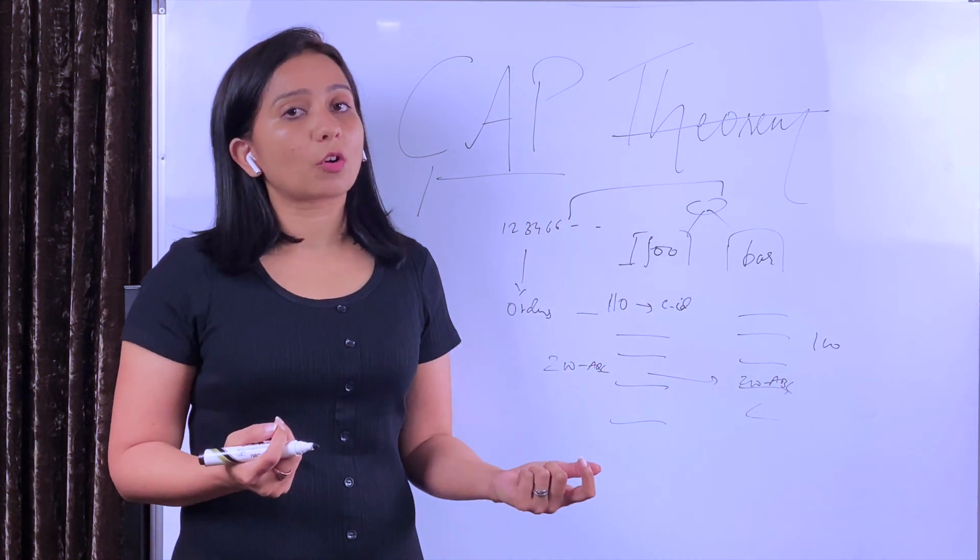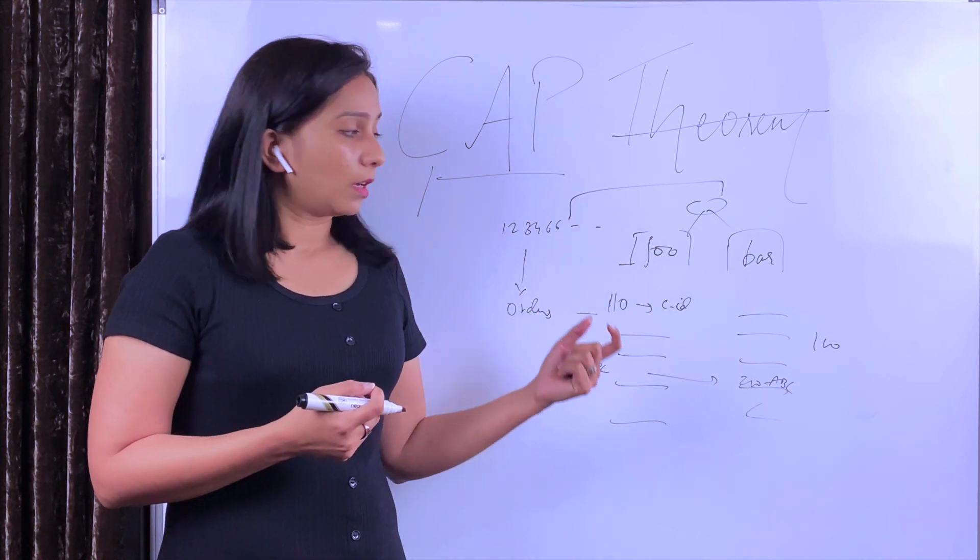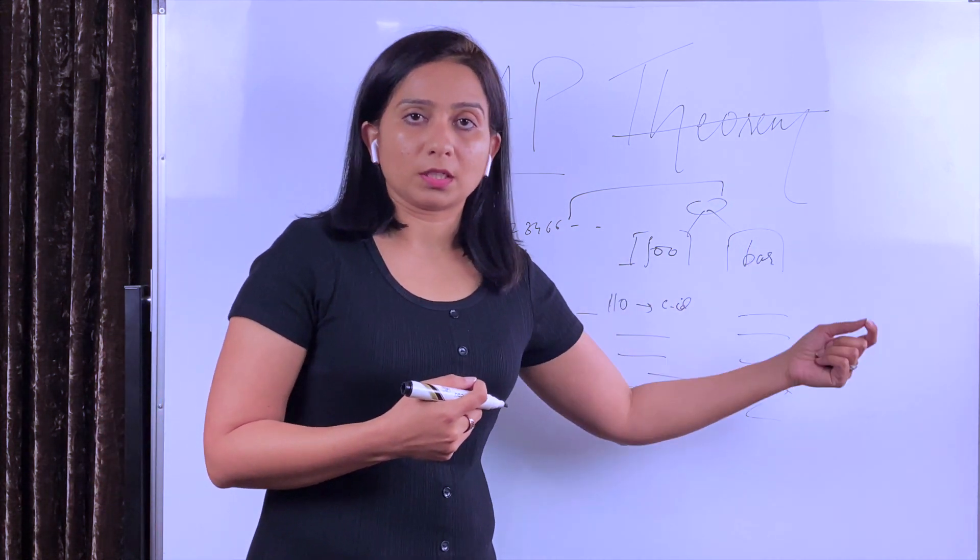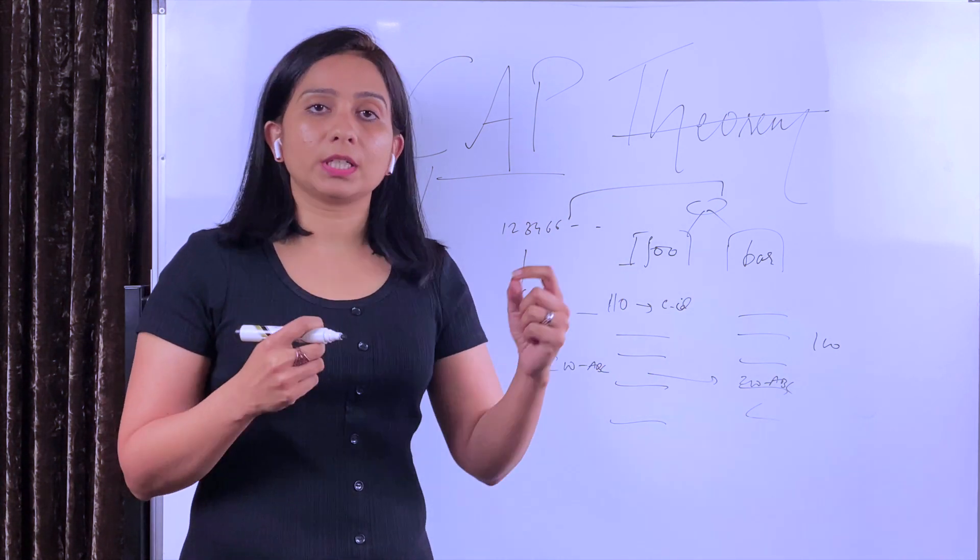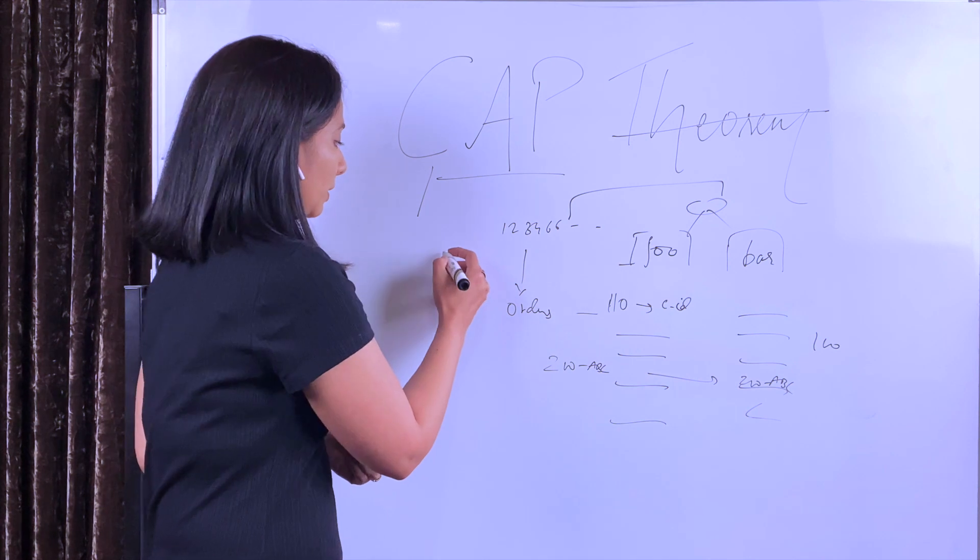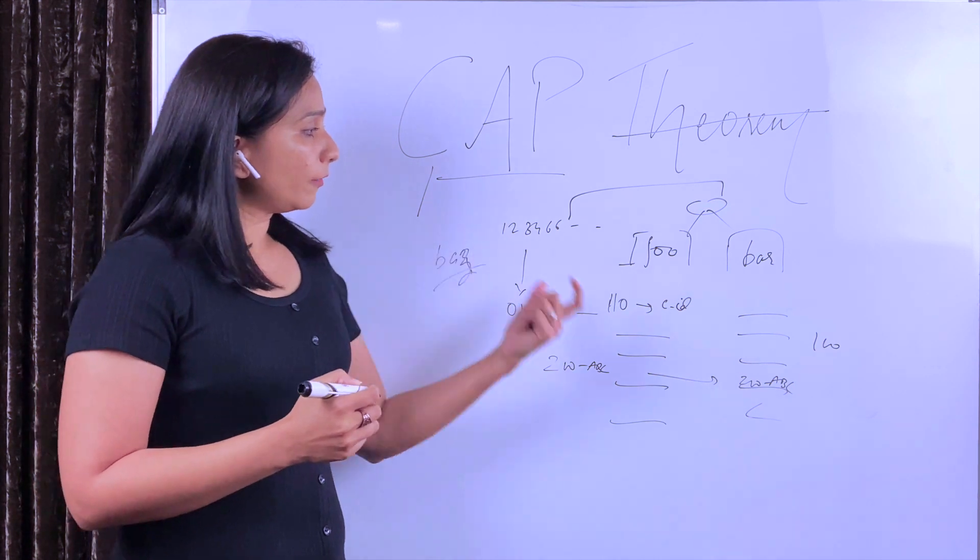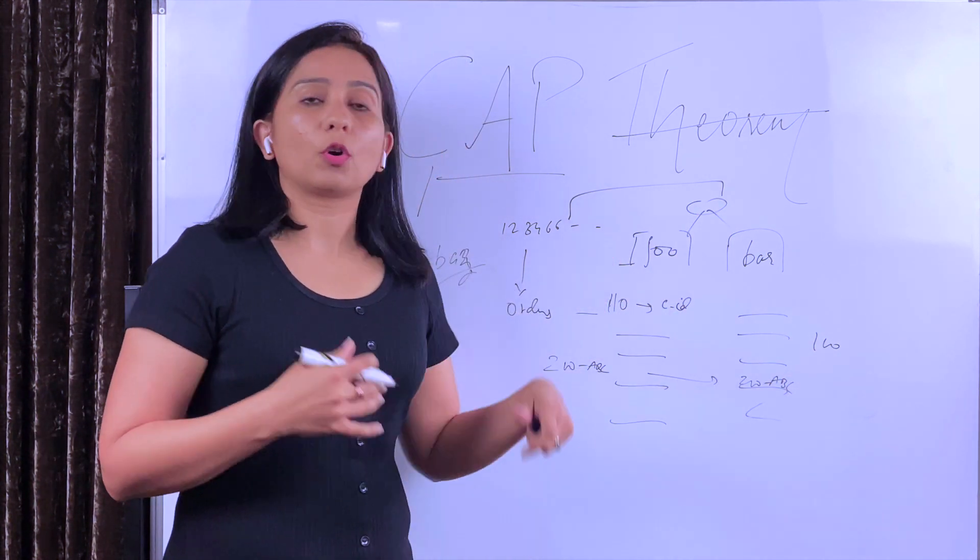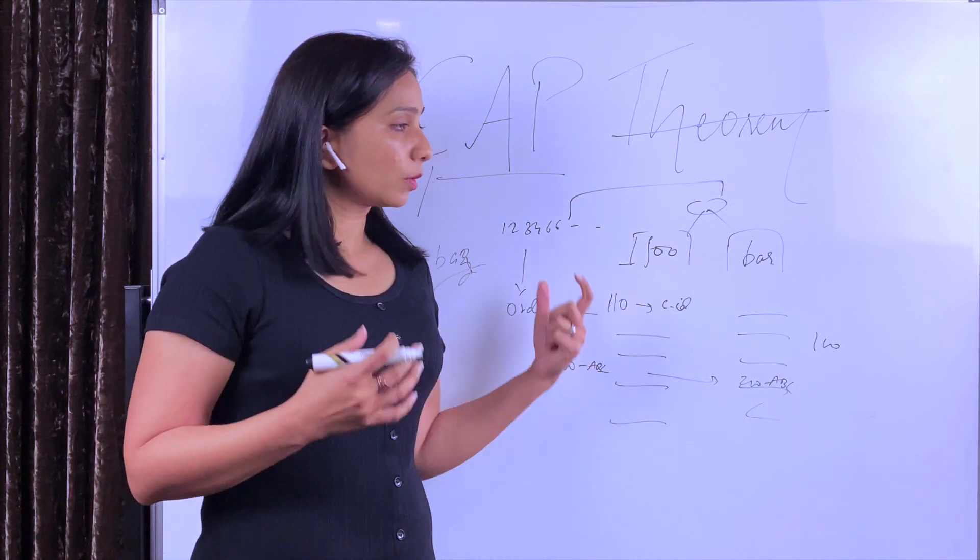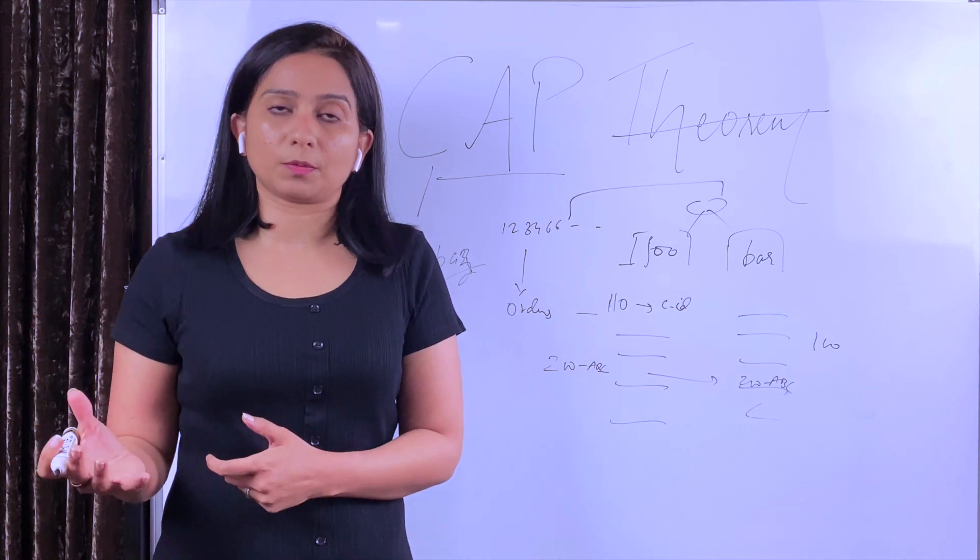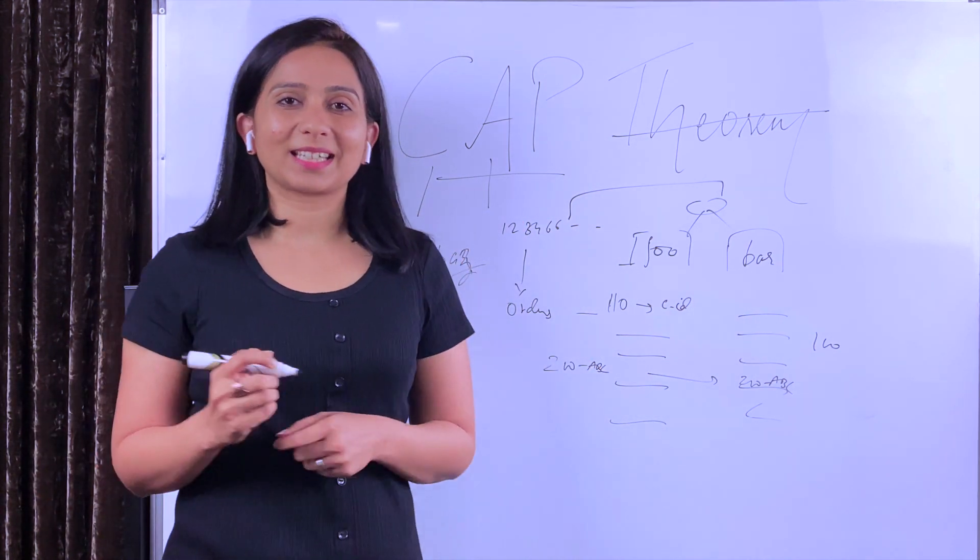Even though you are present to take the calls, but not as much. Remember throughput? The throughput for your system is not as high when your partner is also available. When your partner was there, 400 orders per day was your throughput, and now it's only 200 or maybe 300 because you are alone today. If you have more number of partners, say two, three, four, then the overall availability of your system increases. This is the property that is called availability in CAP theorem.